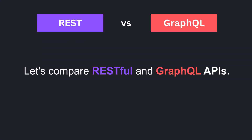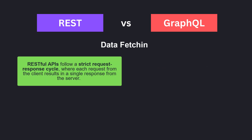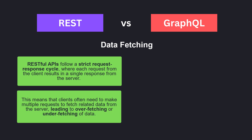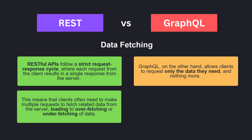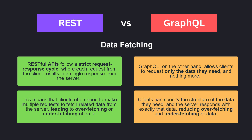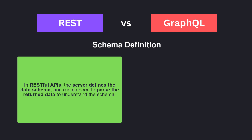Now let's compare RESTful and GraphQL APIs. Based on data fetching, RESTful APIs follow a strict request-response cycle where each request from the client results in a single response from the server. This means clients often need to make multiple requests to fetch related data, leading to over-fetching or under-fetching of data. GraphQL, on the other hand, allows clients to request only the data they need and nothing more. Clients can specify the structure of the data they need, which reduces over-fetching and under-fetching.